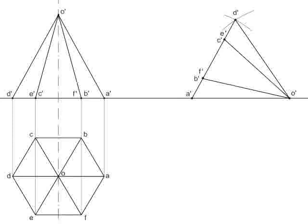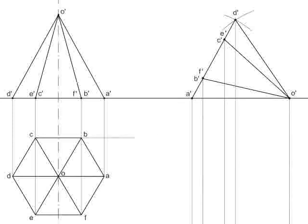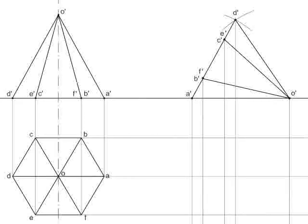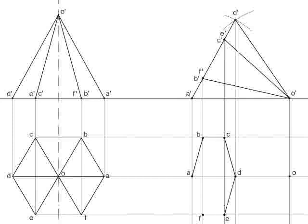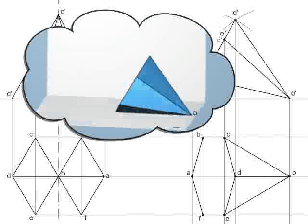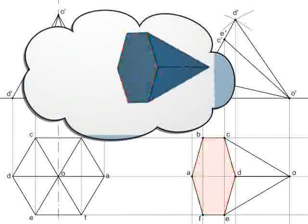So let's generate its projection. Draw the projectors in downward direction. Also take the projections from the previous plan. Locate and connect the intersecting points as A, B, C, D, E, and F. See the base is visible from the top. We will be getting the hexagonal base.